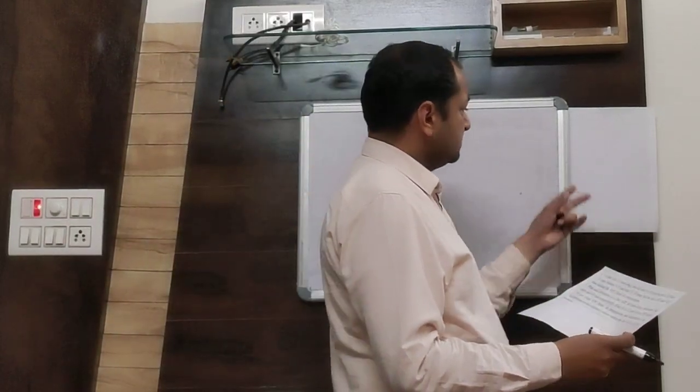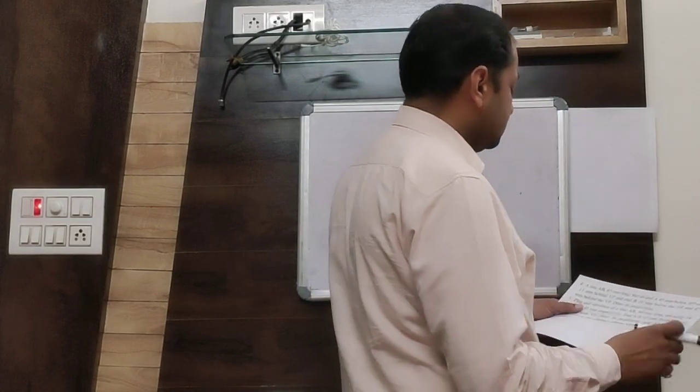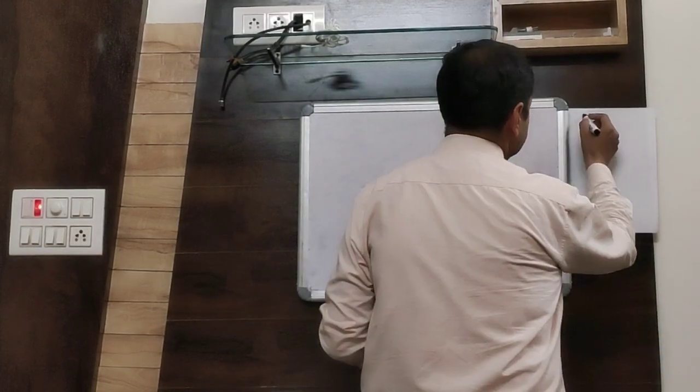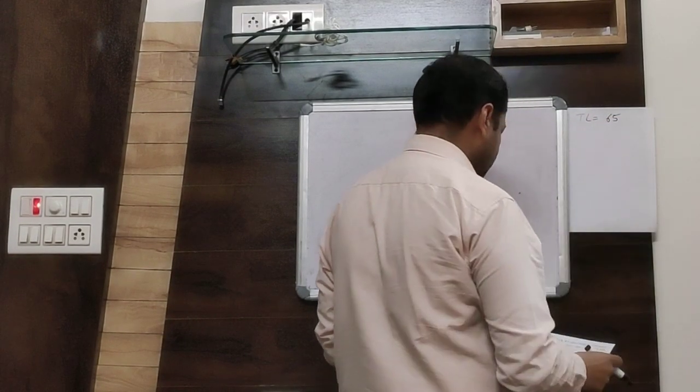I will note the important points in the question. A line AB, 65mm long, means its true length is given to be 65mm.